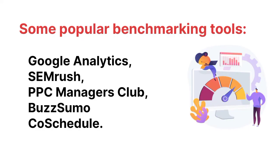Step five: create benchmarks. It's important to keep track of your progress and compare yourself to benchmarks that you establish. This way you can see whether or not you're making the right decisions and ensure that your marketing is working as planned. Some popular benchmarking tools include Google Analytics, SEMrush, PPC Manager's Club, BuzzSumo, and CoSchedule.